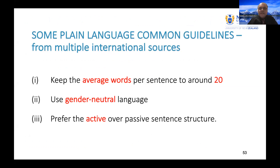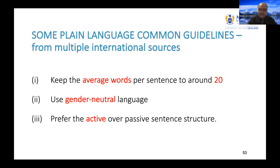Guideline one: average words per sentence of around 20. Judge Mark Painter in his 40 Rules of Legal Drafting suggests 18 — no big difference. Remember, this is an average: some sentences could be 30 words, some 5, some 8. American presidents' speeches these days average around 15 words per sentence — that's how powerful plain language is. Guideline two: gender-neutral language. Don't say 'he' to include she and everything else. Use gender-neutral language without the cumbersome 'he or she.'